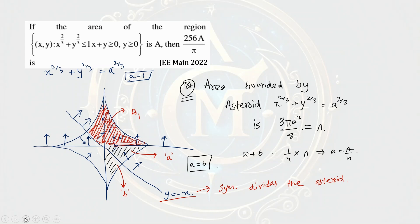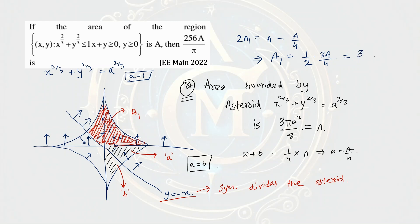The area of region a1, when multiplied by 2, gives the total area of the astroid minus 1/4 of the total area — that is A − A/4 = 3A/4. So the area of a1 is half of 3A/4. Since a = 1, we have 3πa²/8 = 3π/8, and the area of a1 comes out to be 9π/64.